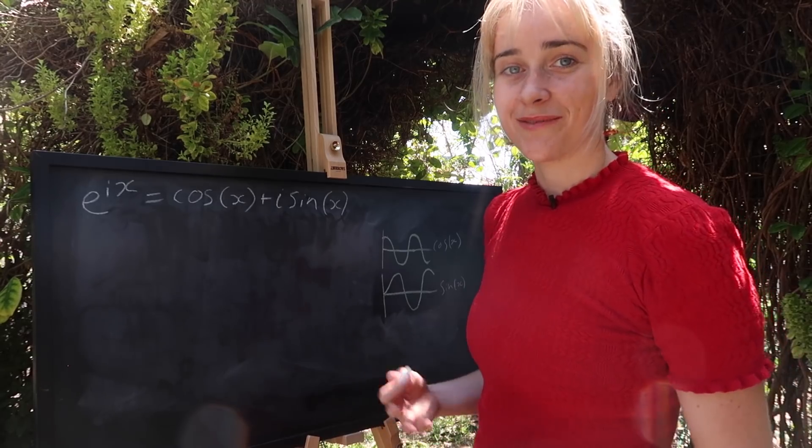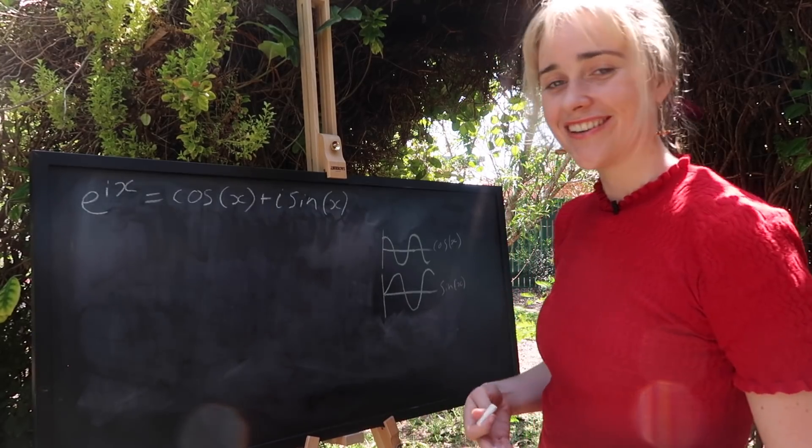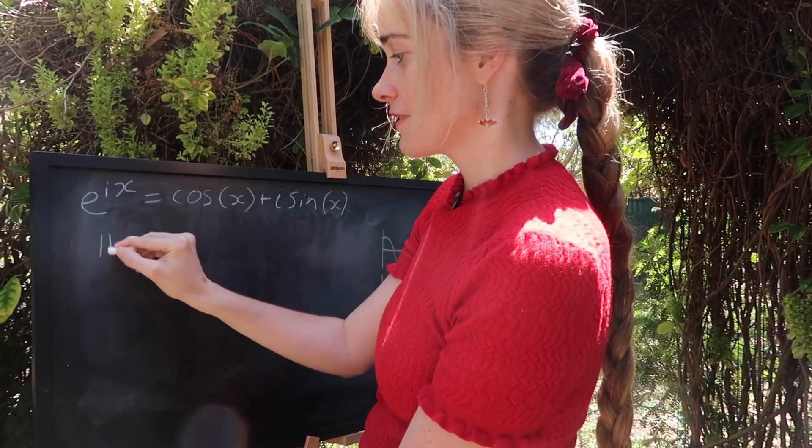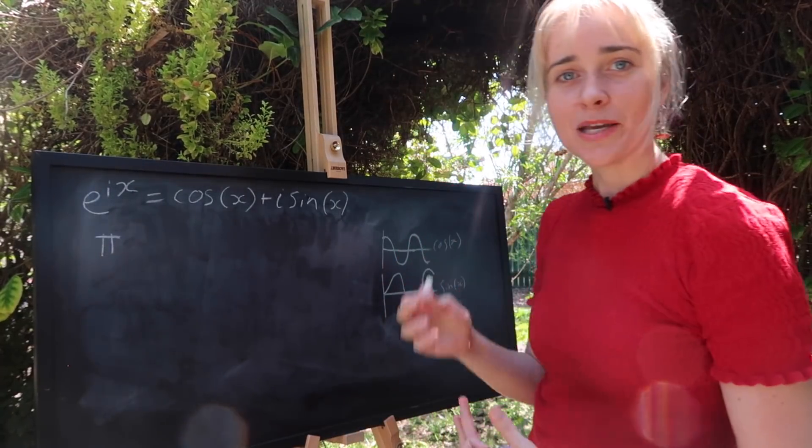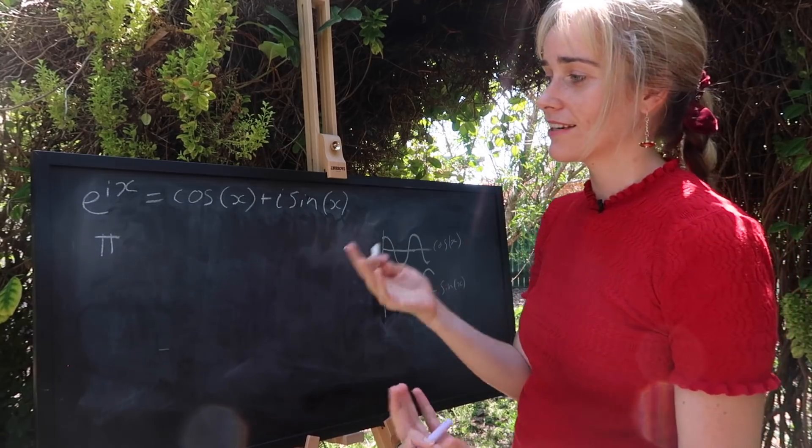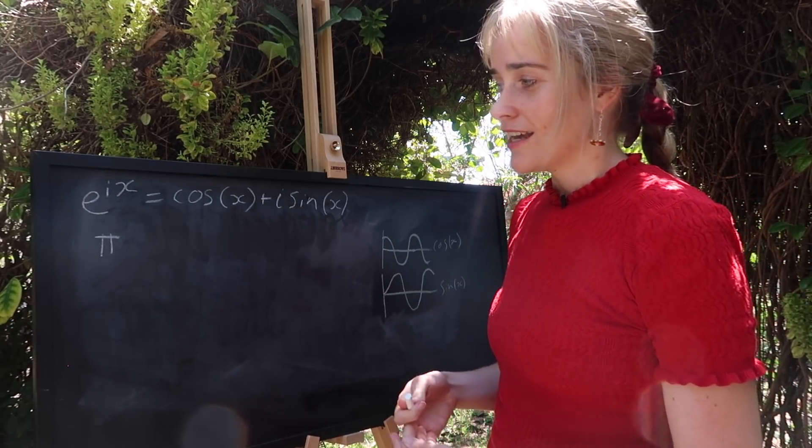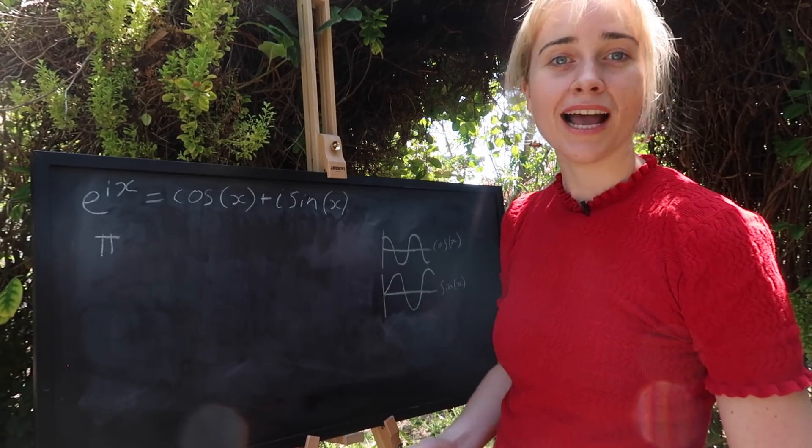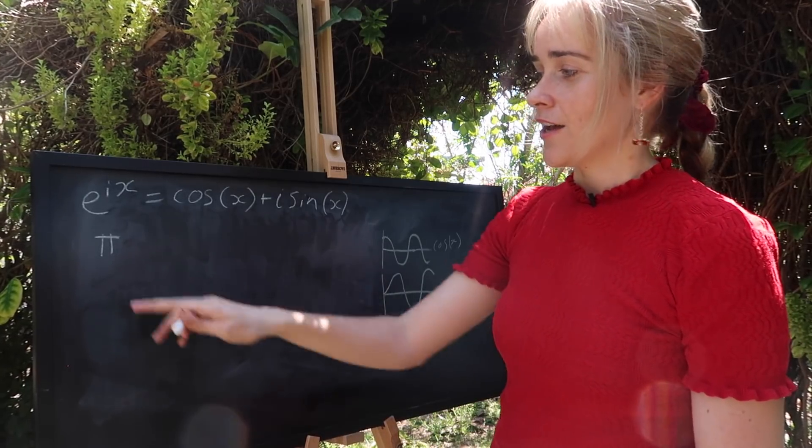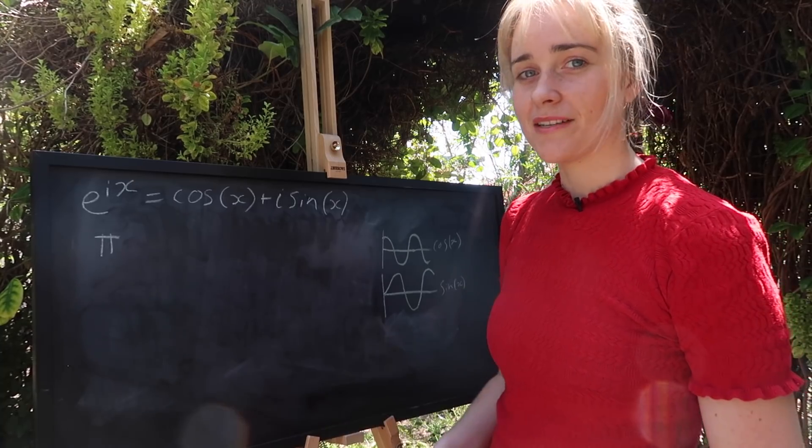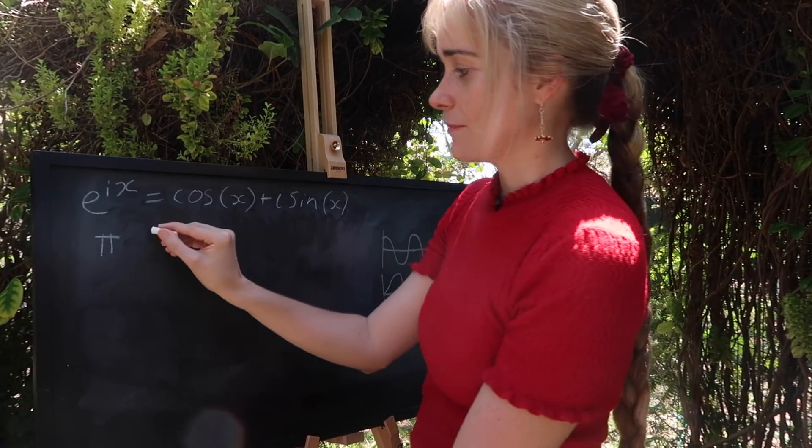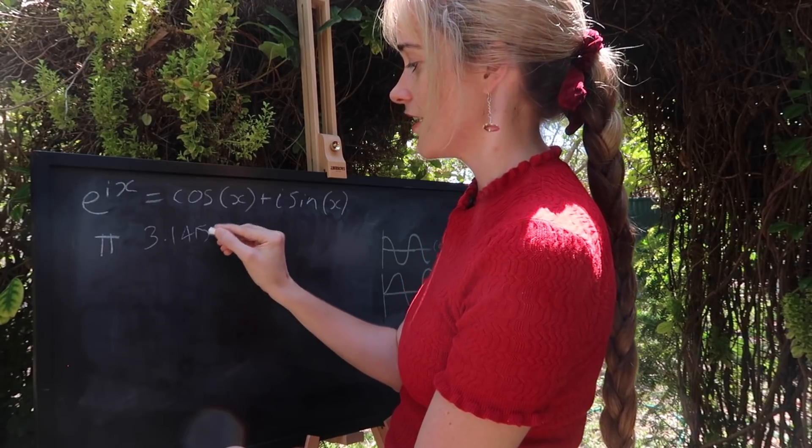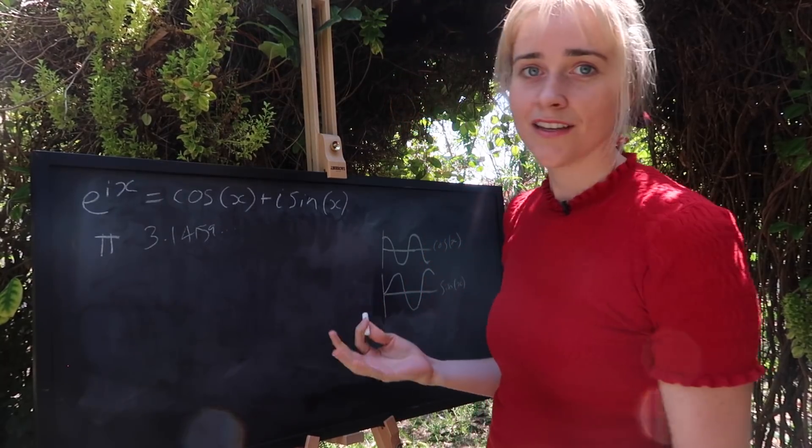But what if we threw in one more curveball here? I'm sure you guys can handle it. I do believe in you. And our curveball is going to be pi. Many of you would have heard of pi. It's related to circles. In fact, if you knew the diameter of a circle and wanted to find the circumference or how far around the outside, you would do pi times the diameter. It's a curious little number and it's equal to 3.14159 and it keeps going forever.